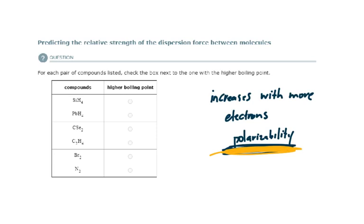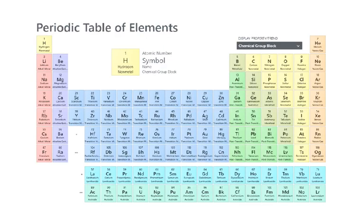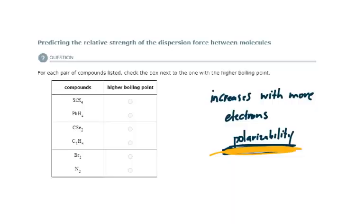I've got SiH4. If I go to a periodic table, one atom of silicon has 14 electrons. Each hydrogen atom has one. That's 18 electrons total. Right? 18 here.